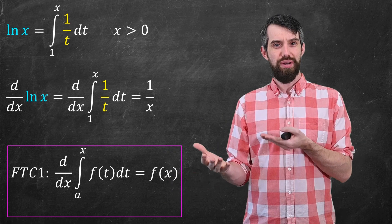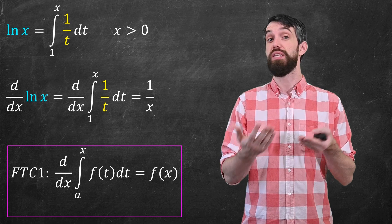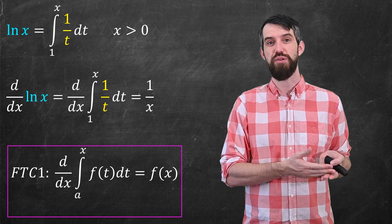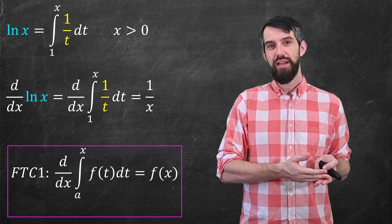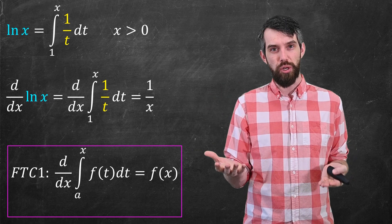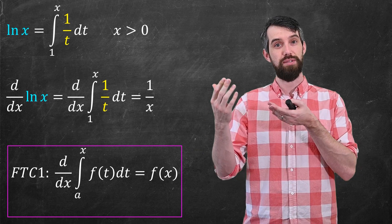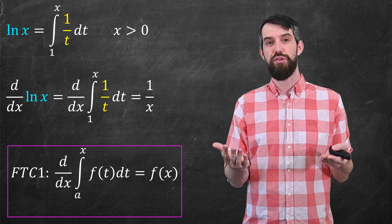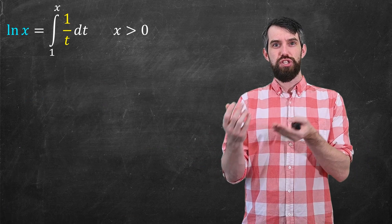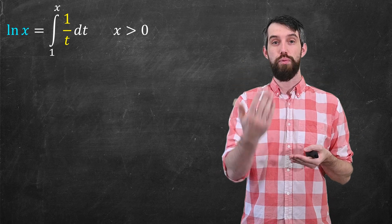One of the things that's so nice about this approach is that we learn the logarithm function is differentiable, and thus continuous, for positive values of x. This is actually not trivial when you do the exponential approach — even the fact that the exponential function is continuous takes some effort to deduce. Remember that the old approach started with the exponential and then led to the logarithm, but here I want to go in reverse.